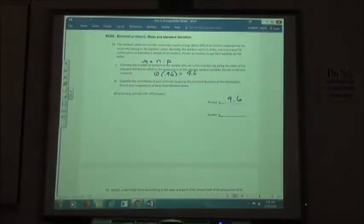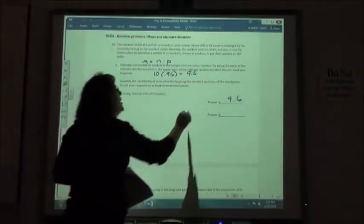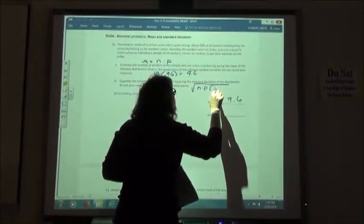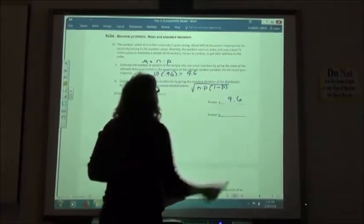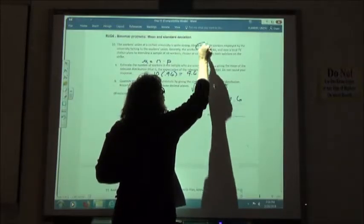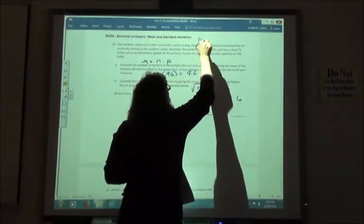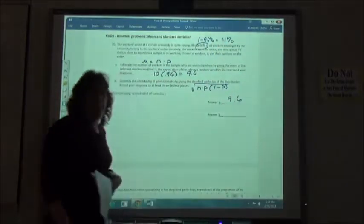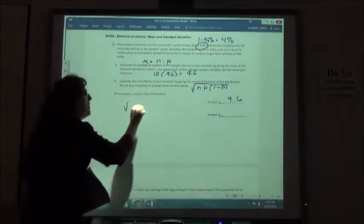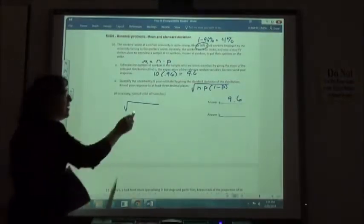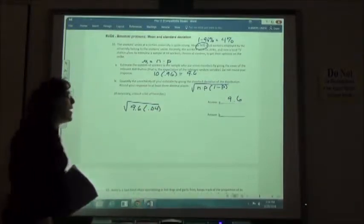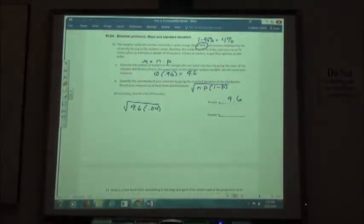The second part is going to ask for the standard deviation of your distribution. The standard deviation, you're going to do the square root of your n times p times 1 minus p. 1 minus p is when you do what's called the complement of that. 1 minus 96% is 4%, right? So in my formula, I've already figured out the n times the p was 9.6. I'm going to take that times the n, or the 1 minus p, which is my 4% .04.